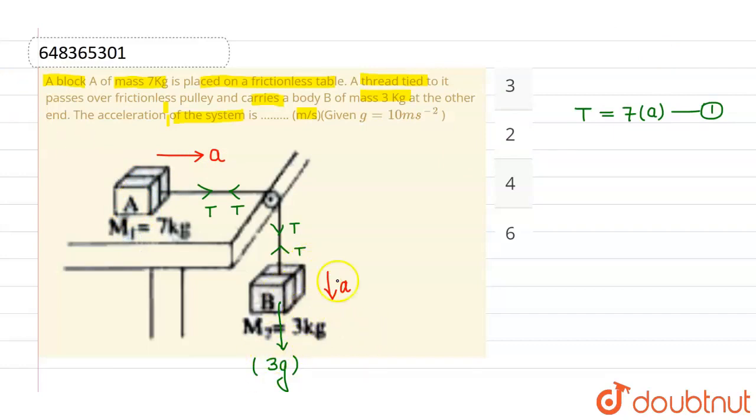Now, for this particular block, I can write the equation that 3g minus T should be equals to mass of the block into acceleration of the block. Now these are the two equations that we need to solve and we have to find out the value of A.